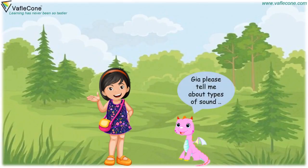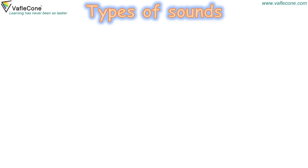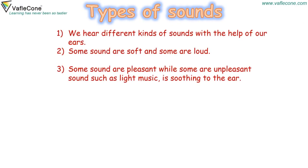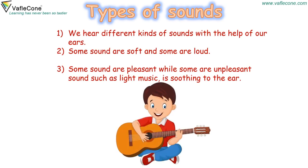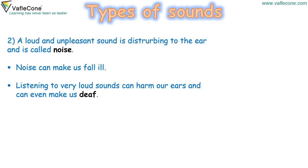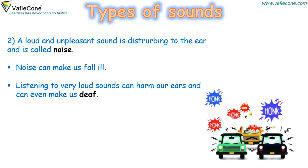Jia, tell me about types of sound. Sure, Dodo. Types of sounds: We hear different kinds of sound with the help of our ears. Some sounds are soft and some are loud. Some sounds are pleasant while some are unpleasant. Light music is soothing to the ear. A loud and unpleasant sound is disturbing to the ear and is called noise. Noise can make us fall ill. Listening to very loud sounds can harm our ears and can even make us deaf.